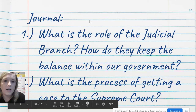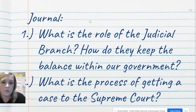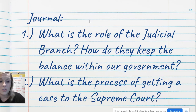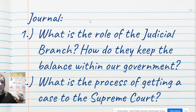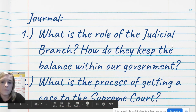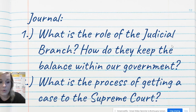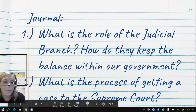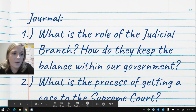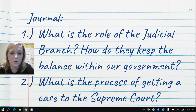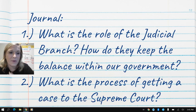Today your journal questions are: number one, what is the role of the judicial branch and how do they keep the balance within our government — what does the judicial branch do and how does it check and balance the other two branches? Question number two is: what is the process of getting a case to the Supreme Court? You might want to pause the video and go back to replay the sections that talk about how you get a case to the Supreme Court. Thanks, guys. Have a wonderful day.